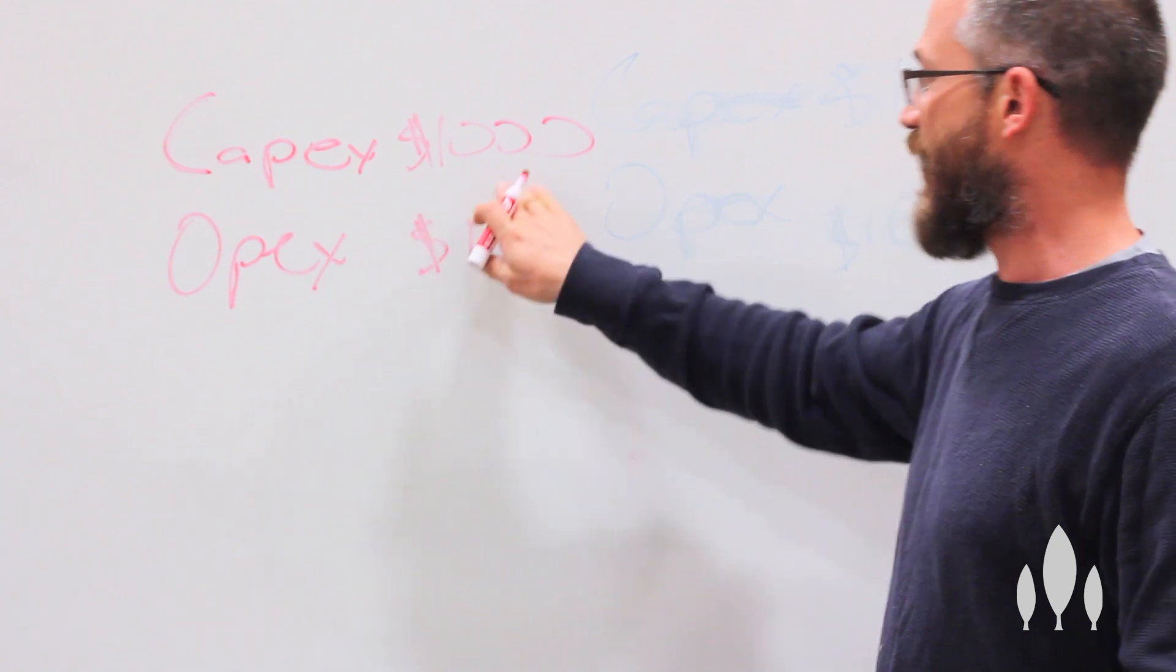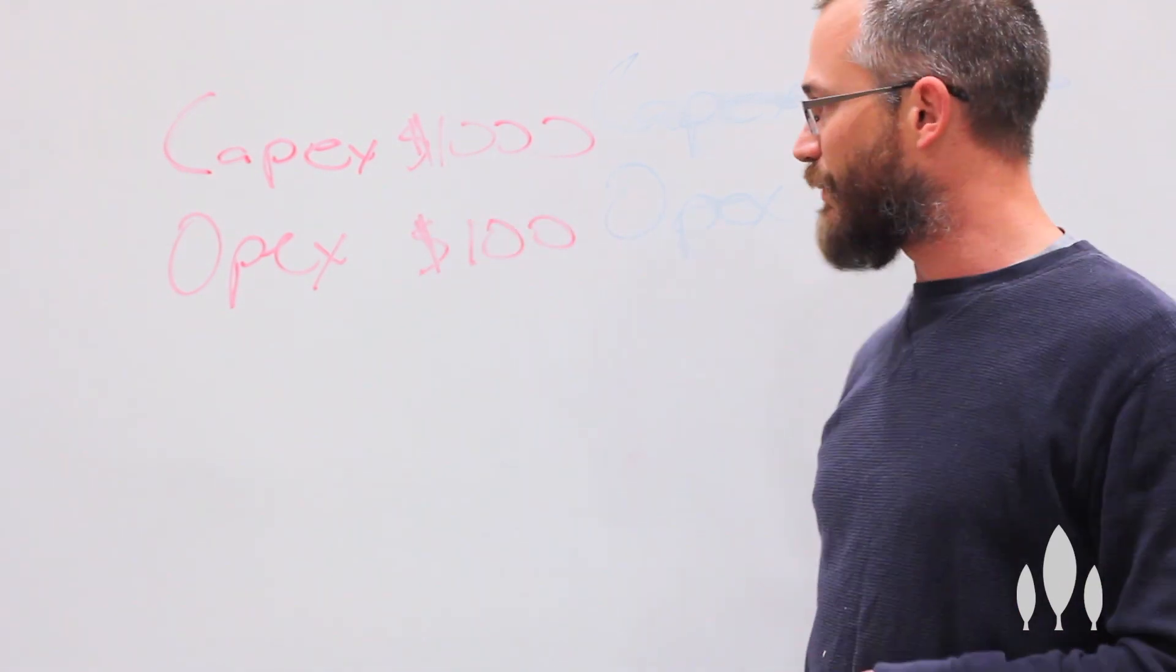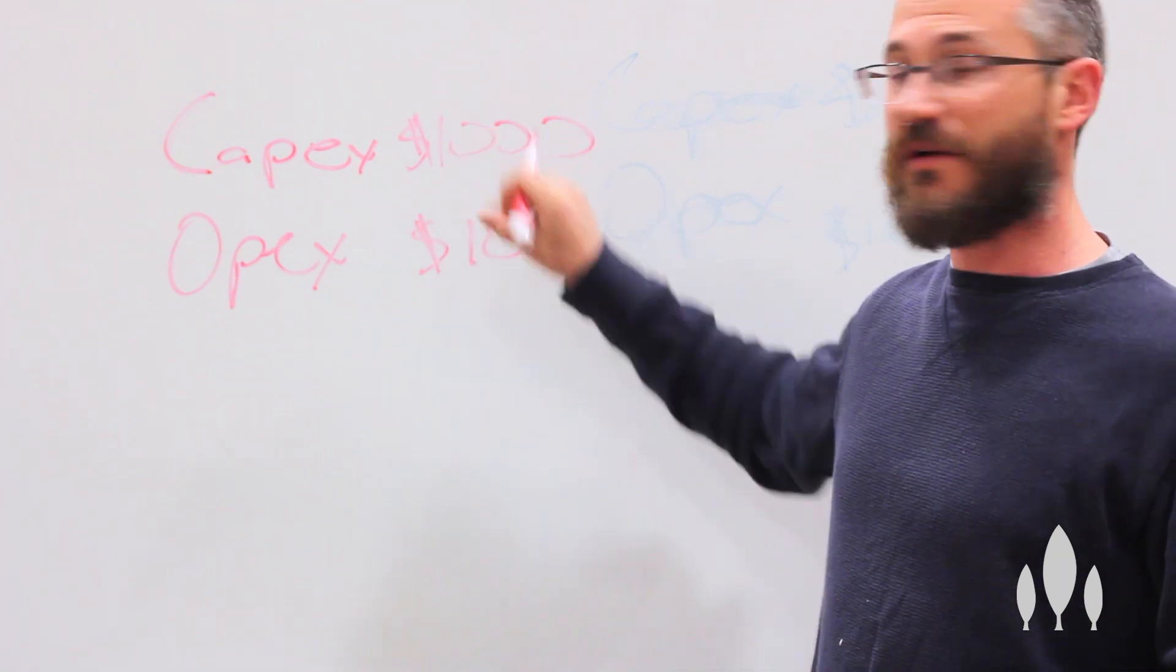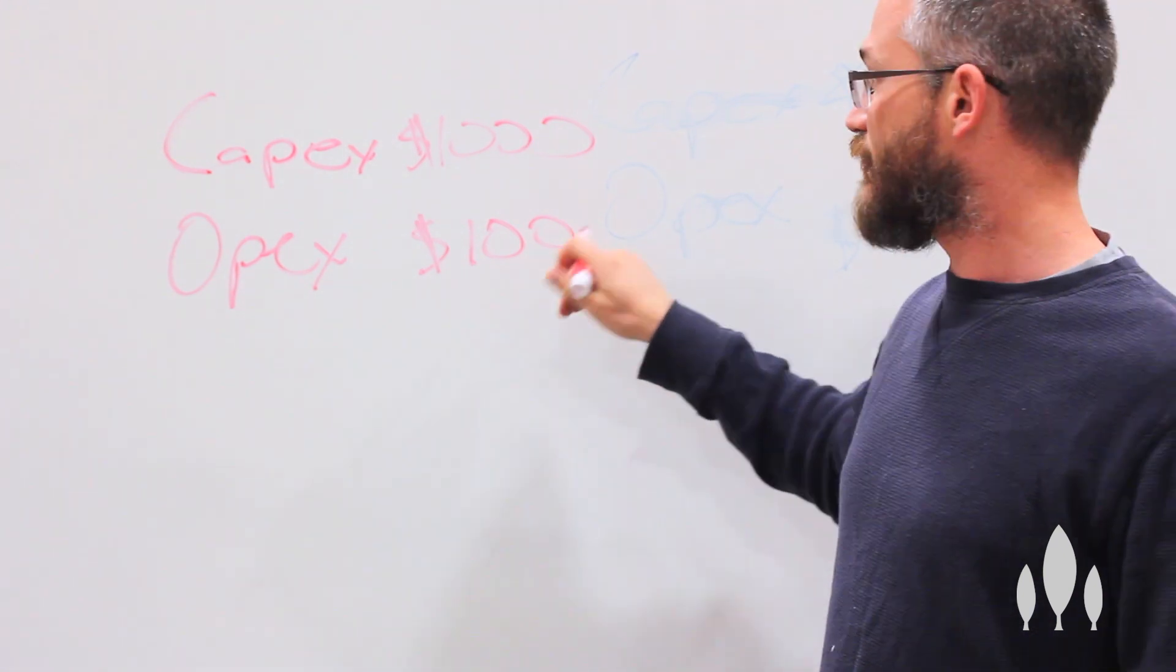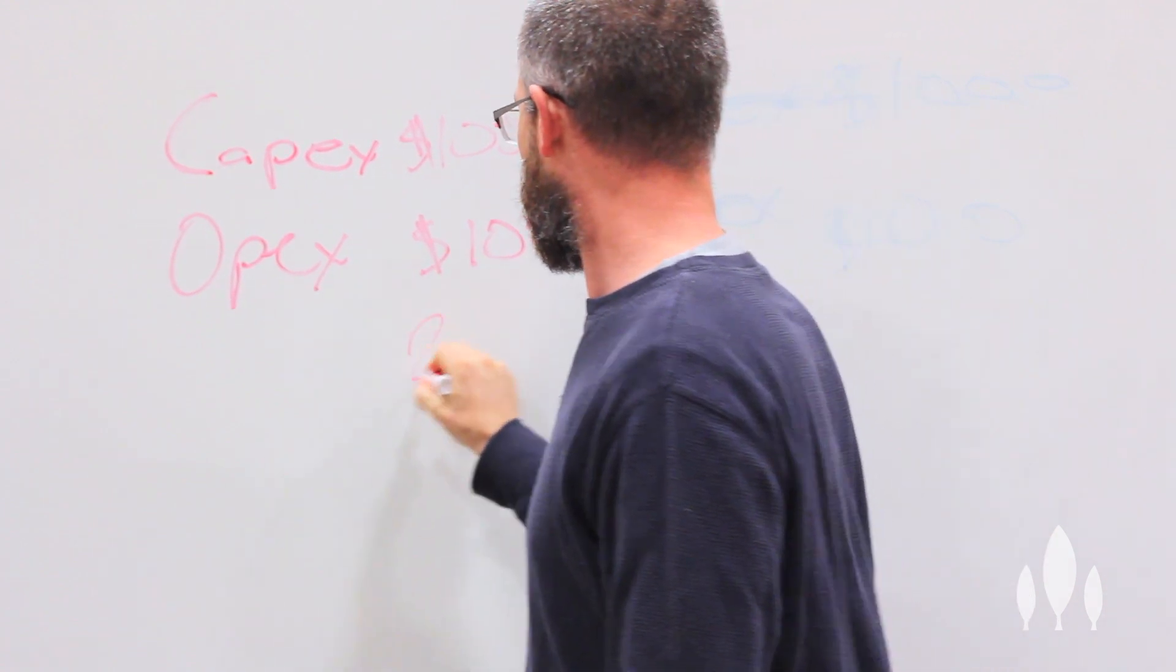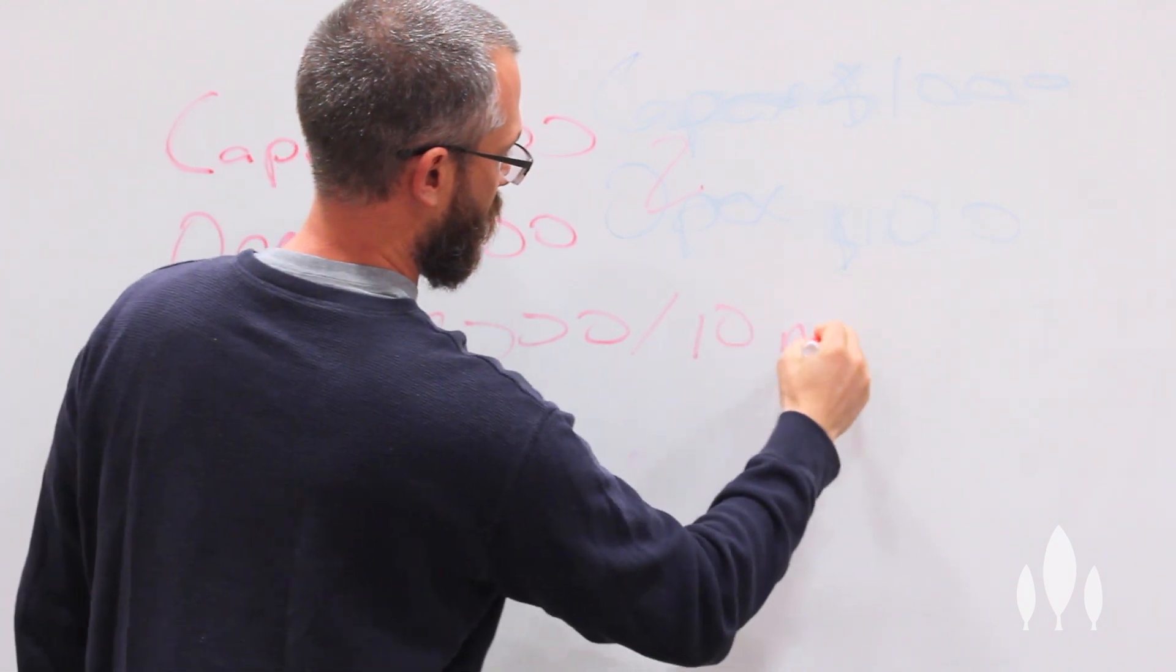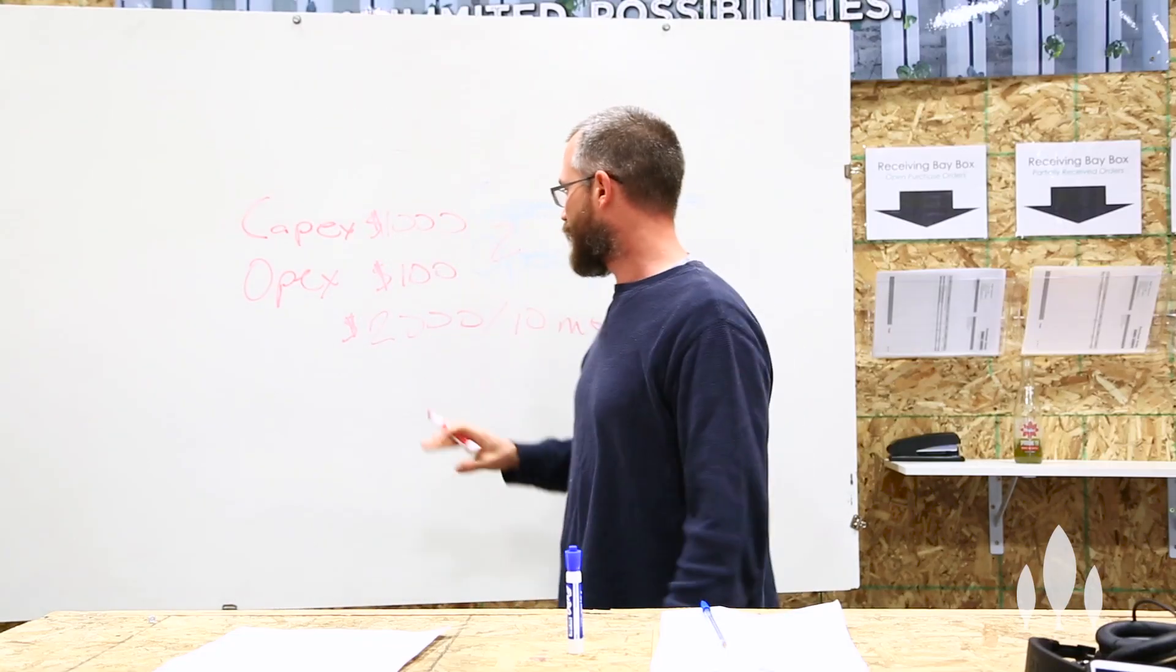So we've got our capex here of a thousand bucks. Let's say this is for the LEDs. I've got our opex of a hundred bucks. So after ten months we would have spent one thousand dollars plus another thousand dollars for the ten months, so after ten months basically two thousand bucks. Two thousand bucks after ten months for these LEDs.